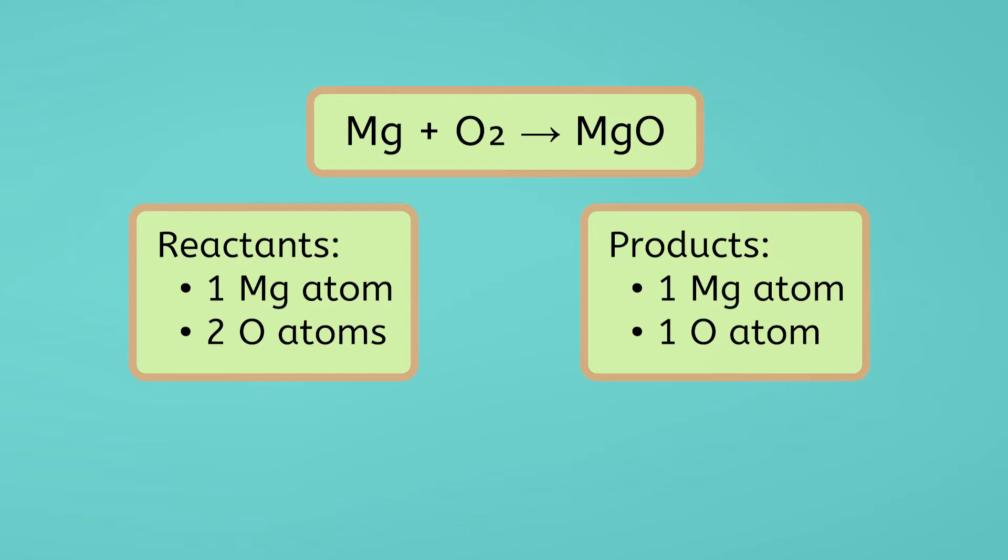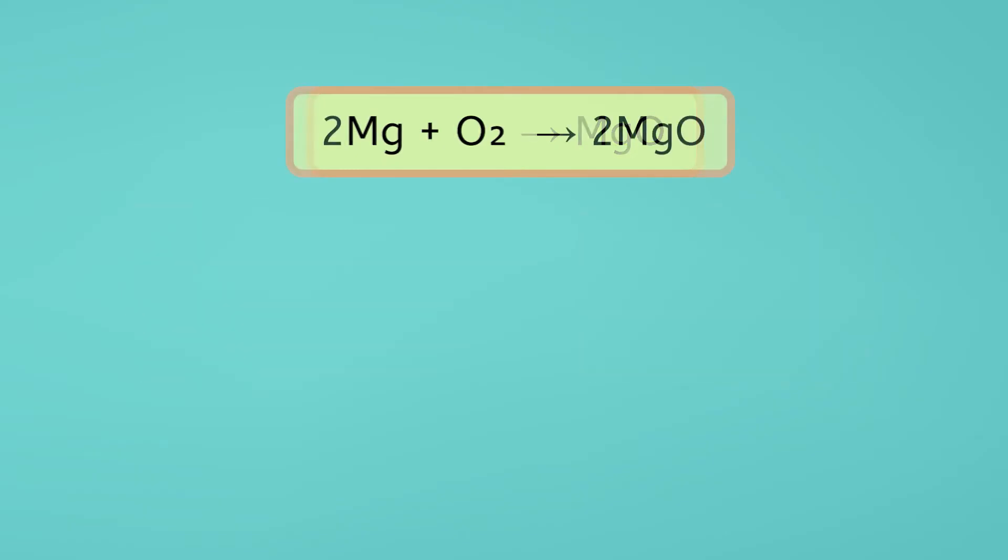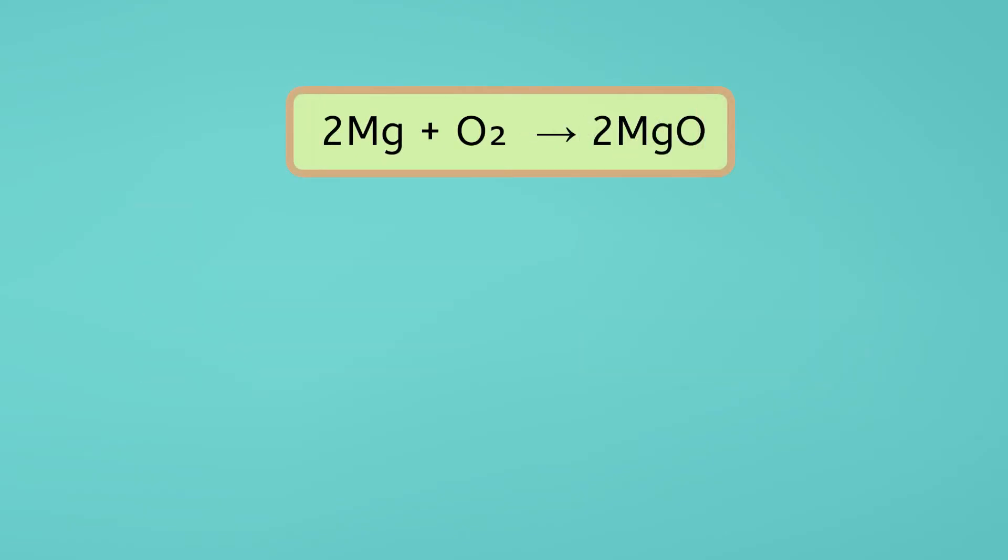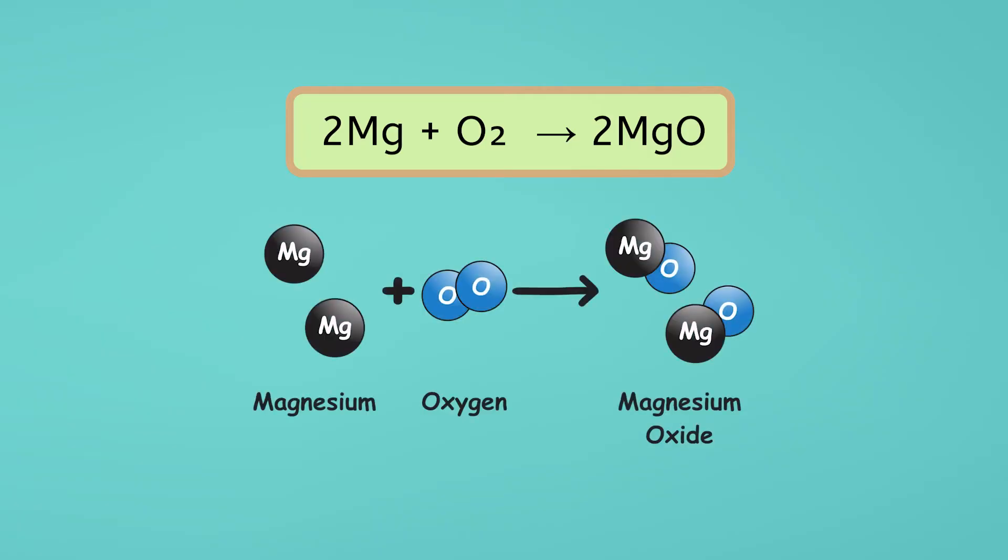Well, what happens if the equation looks like this instead? By adding a 2 in front of the magnesium, we are saying that we would be adding two magnesium atoms to the reaction.